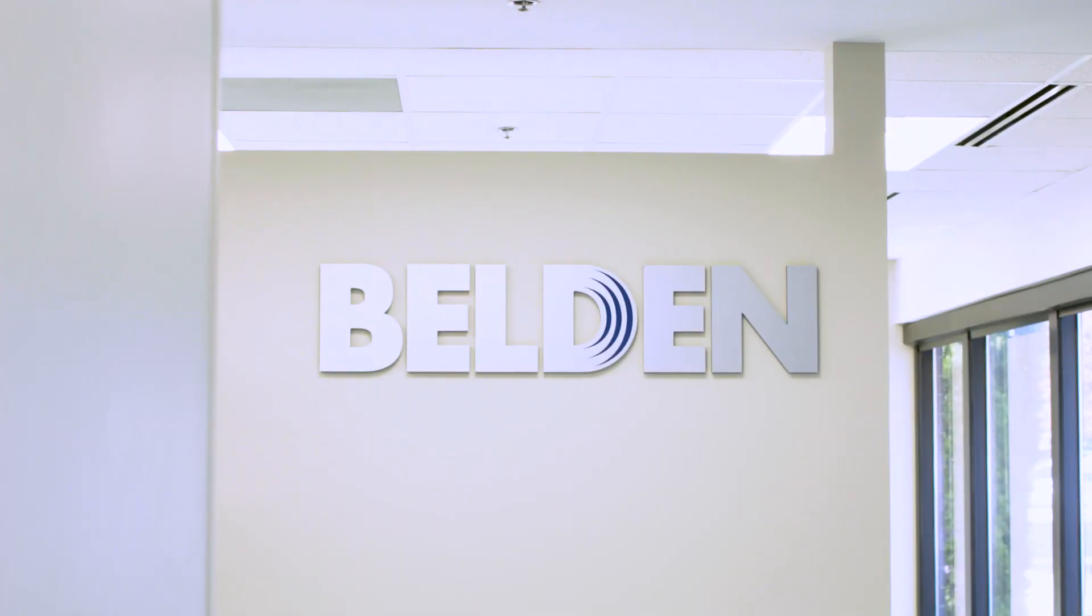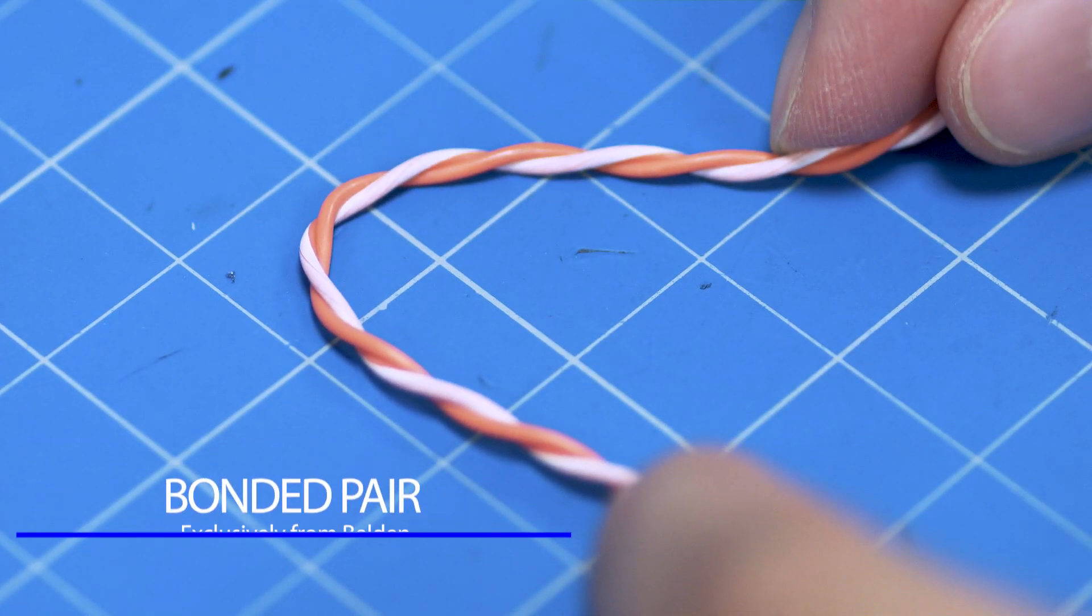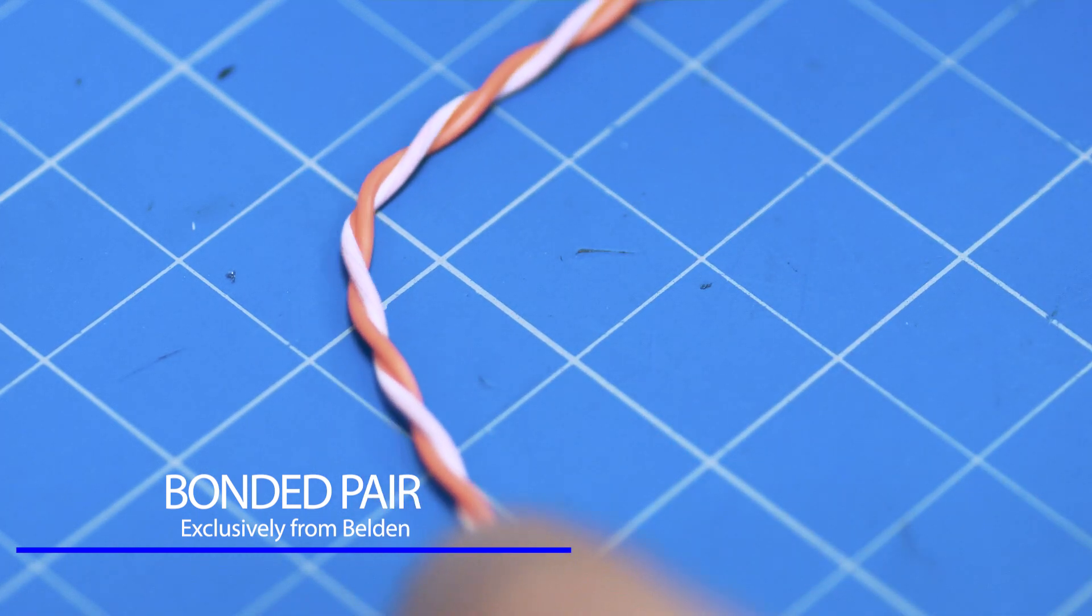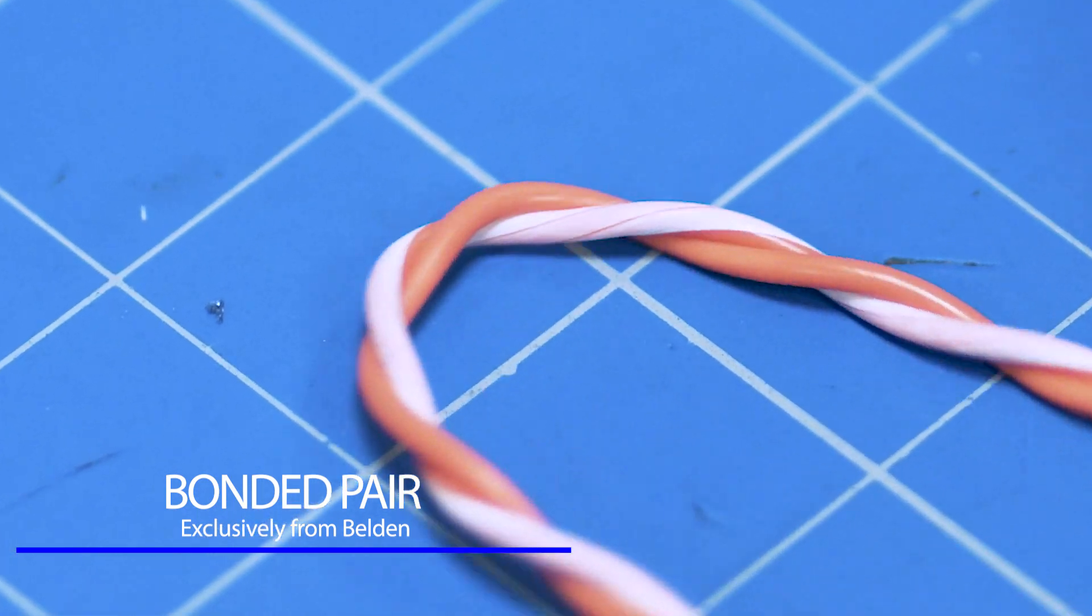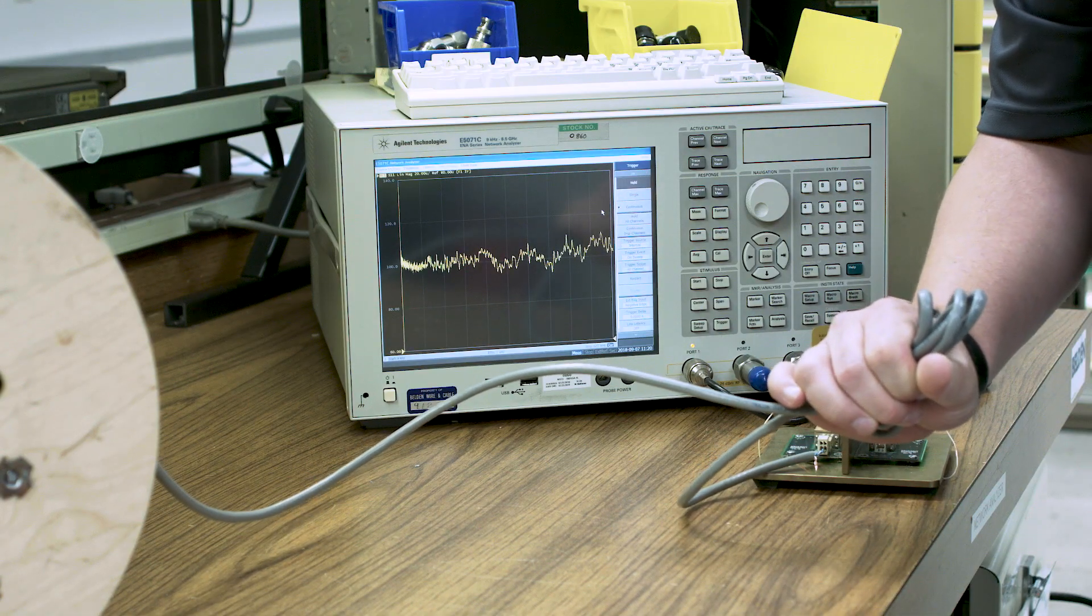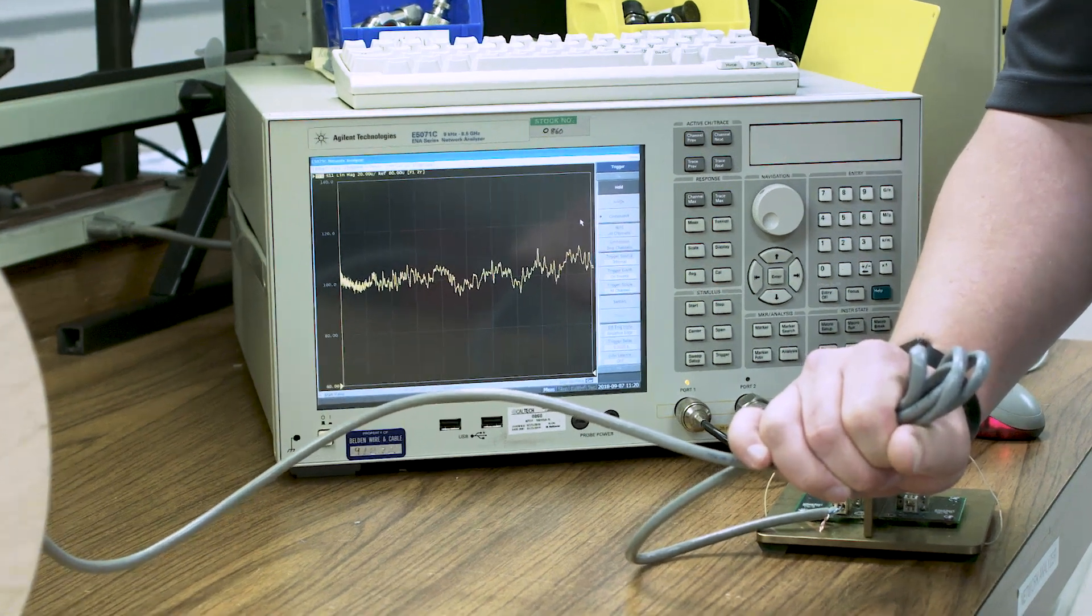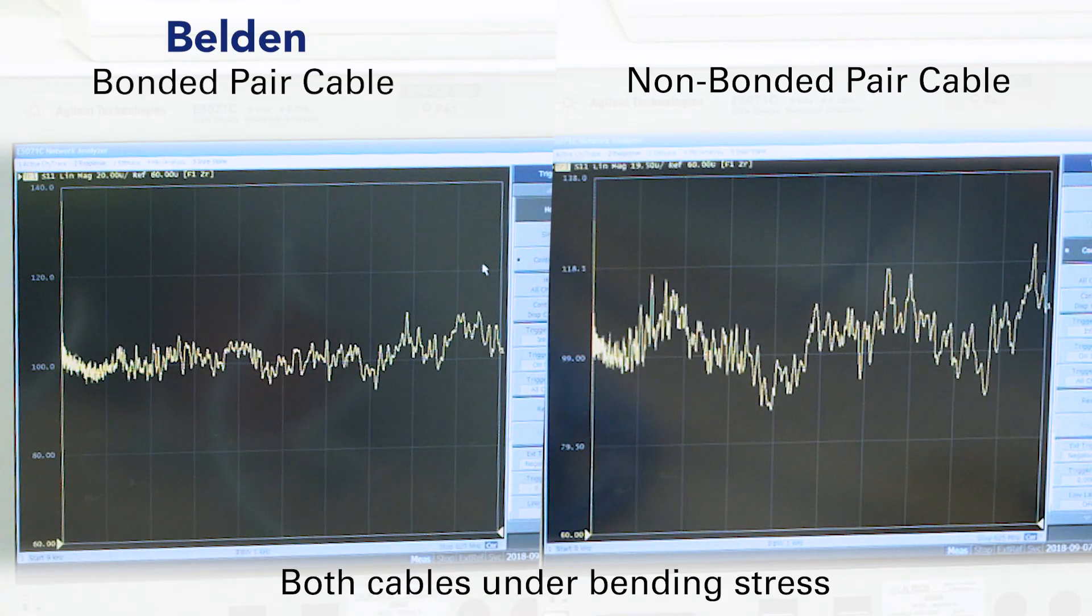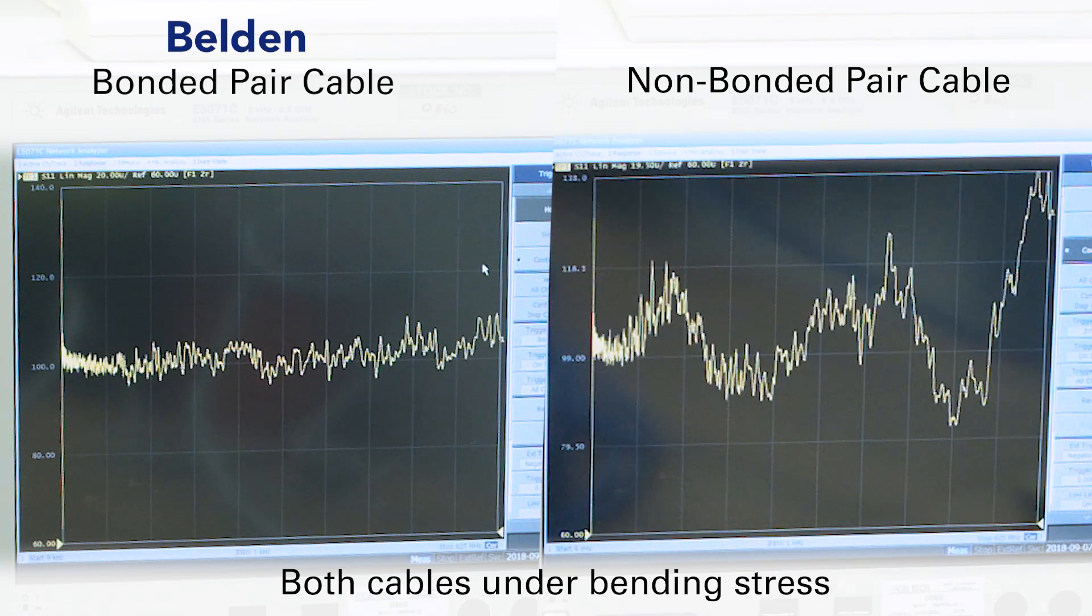At Belden, we believed we could do something about this performance issue, so we developed a unique patented technology called bonded pair that ensures no gap between any twisted pair, no matter the twisting, looping, bending, or manipulations. After extensive testing cycles, here's what the impedance chart looks like for Cat 6 bonded pair cable. From installation on, the stability of bonded pair cable impedance means more reliable performance for your operation.